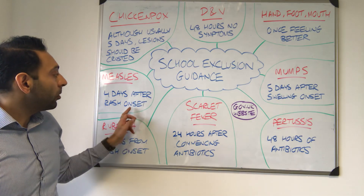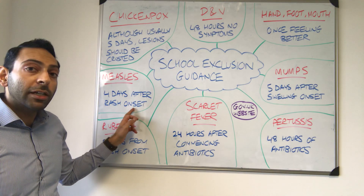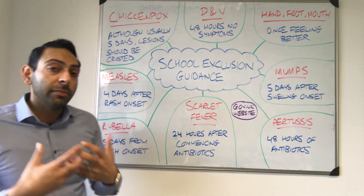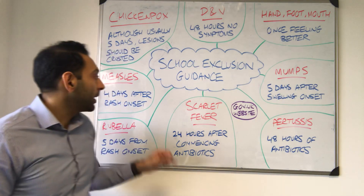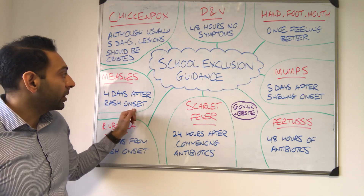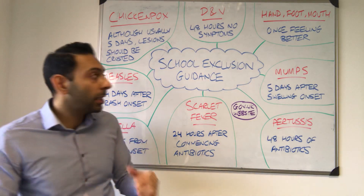Measles — four days after the rash onset. So on that fourth day, once they've had that rash, they should be able to go back as long as they're well.